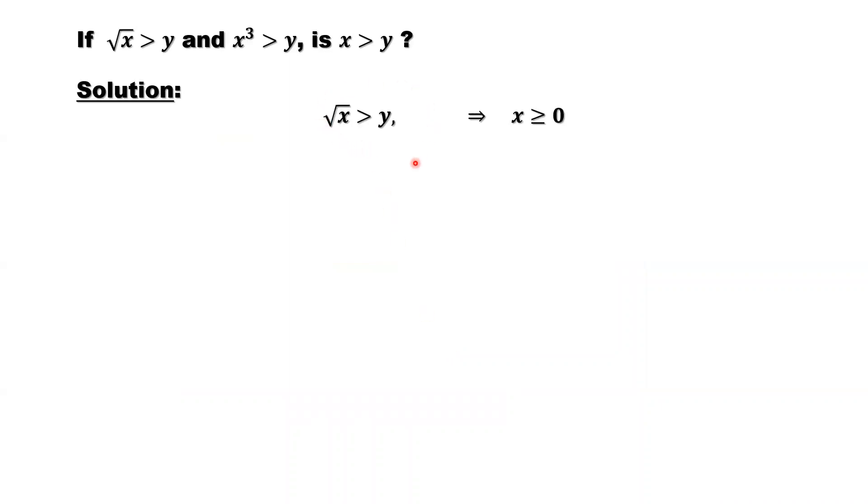From the given condition, square root of x is bigger than y, we can imply x is bigger than or equal to 0 because x is inside of the square root sign. This number must be bigger than or equal to 0. We want to prove x is bigger than y to make sure if it is true. We can consider the situation when x is bigger than or equal to 1 or x is less than 1, two different kind of situations.